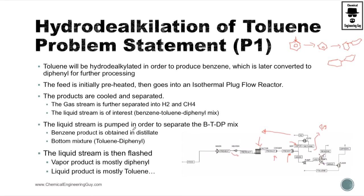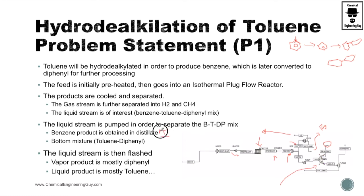The liquid stream is pumped to separate its components. The benzene product is going to be in the distillate of a distillation column. In the bottom we're going to have the toluene and diphenyl mix — this separation is essentially due to the difference in boiling points.